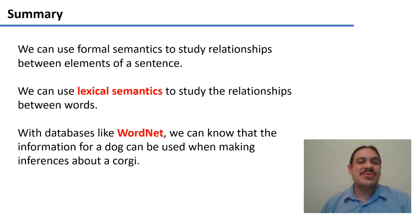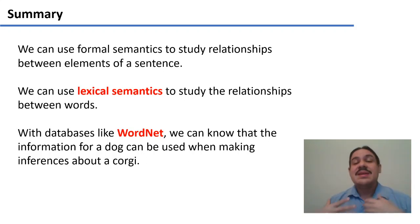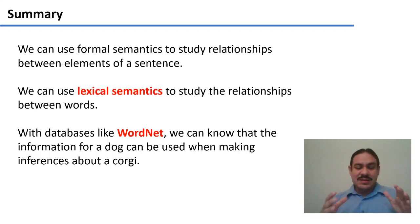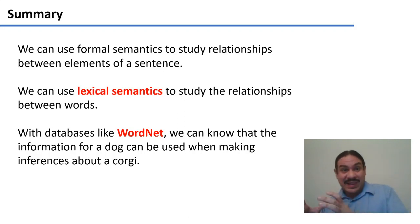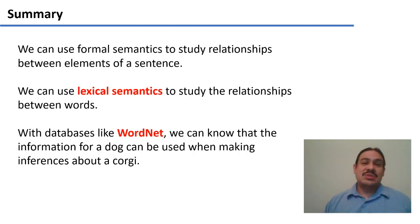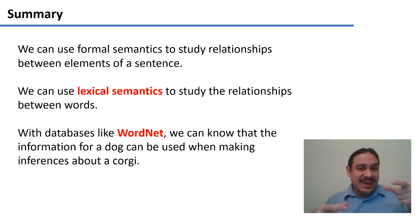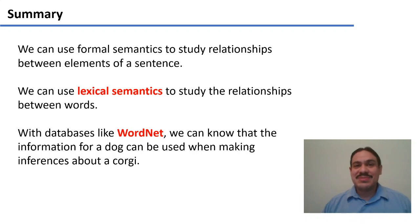That's the summary so far. We use formal semantics to study relationships between elements of a sentence, and lexical semantics to study relationships between words. This also expands our capabilities because we can take information from one word and apply it to related words. We can use databases such as WordNet, where we know that information applying to dog can also apply to corgi. In the next video, we're going to look at a few more relationships captured in WordNet.